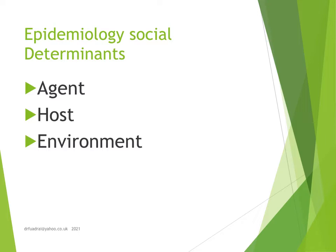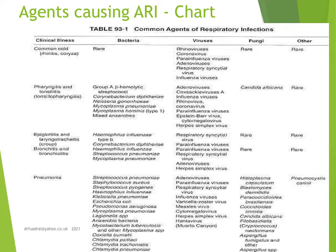As far as the agents causing ARI are concerned, a chart shows the common agents of respiratory infections starting from clinical illnesses like common cold (rhinitis), pharyngitis and tonsillitis, epiglottitis, bronchiolitis, and finally pneumonia. The chart covers bacteria, viruses, fungi, and other organisms which cause both upper respiratory tract and lower respiratory tract infections.